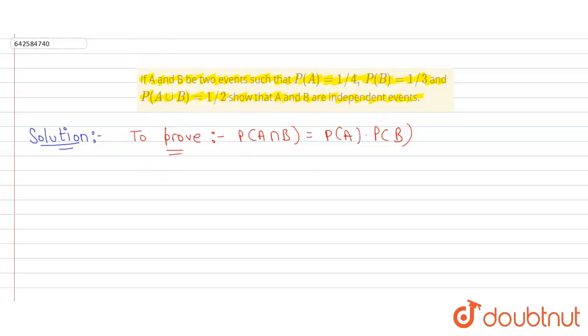So let us start. Proof. As we know, P(A∪B) is equal to P(A) plus P(B) minus P(A∩B).